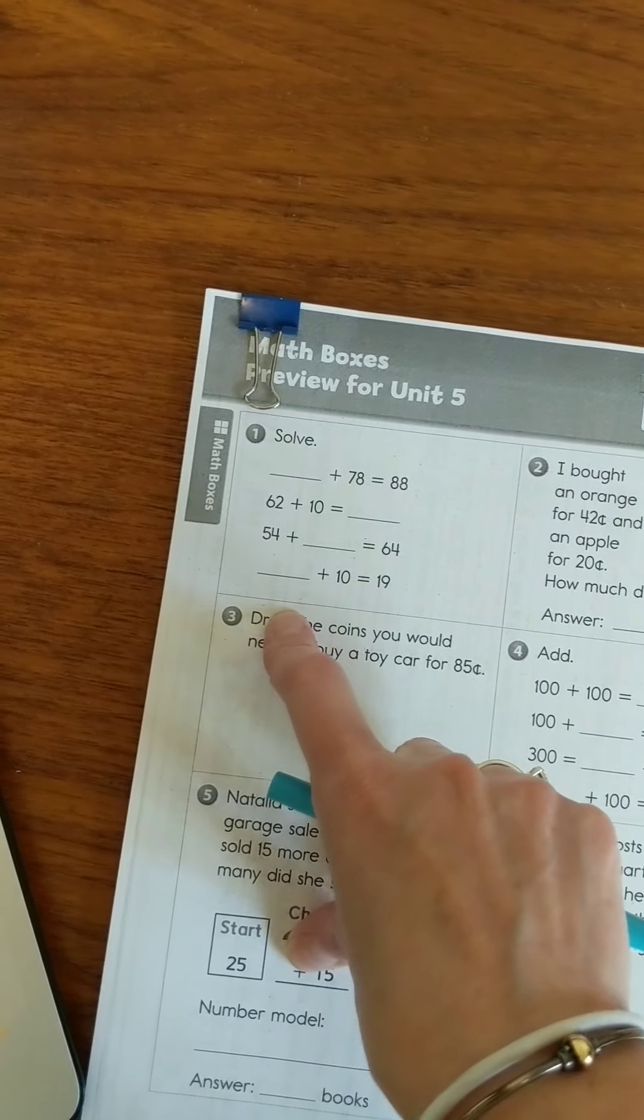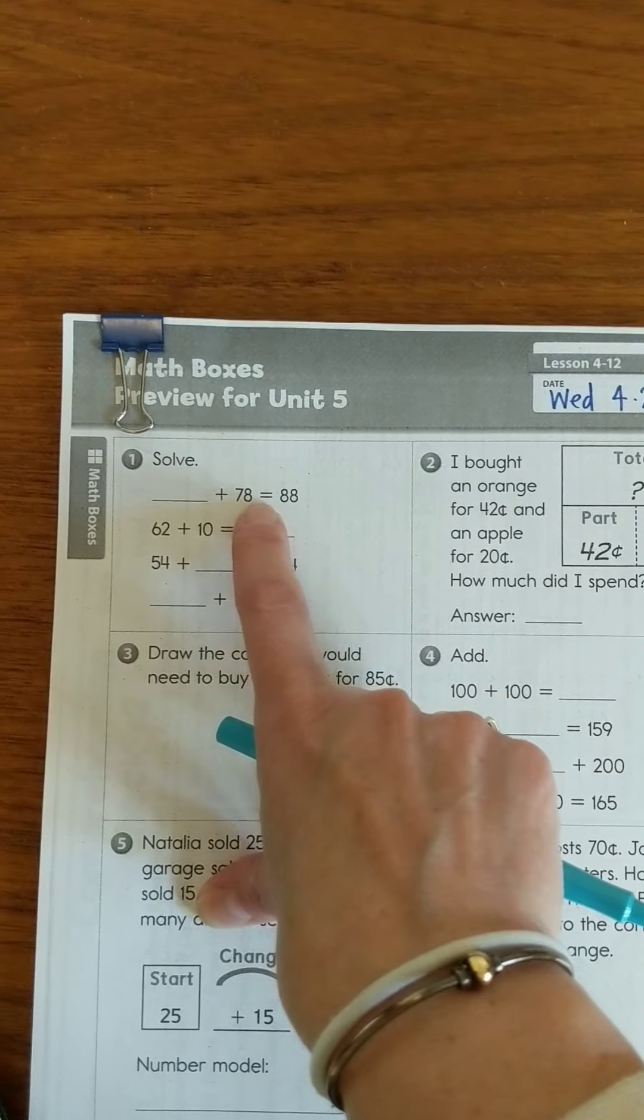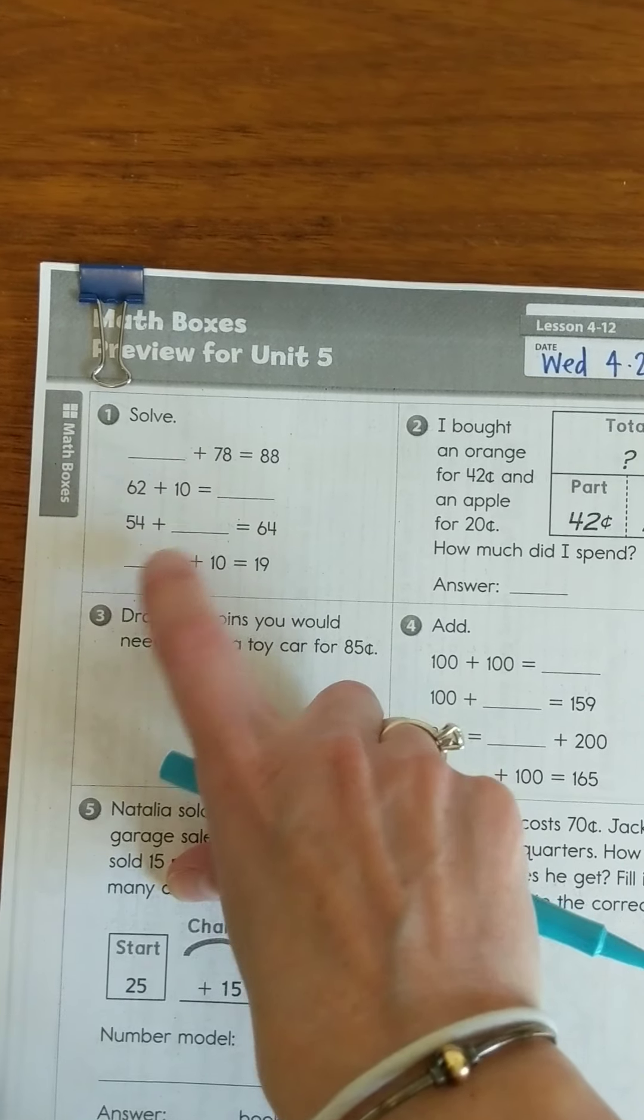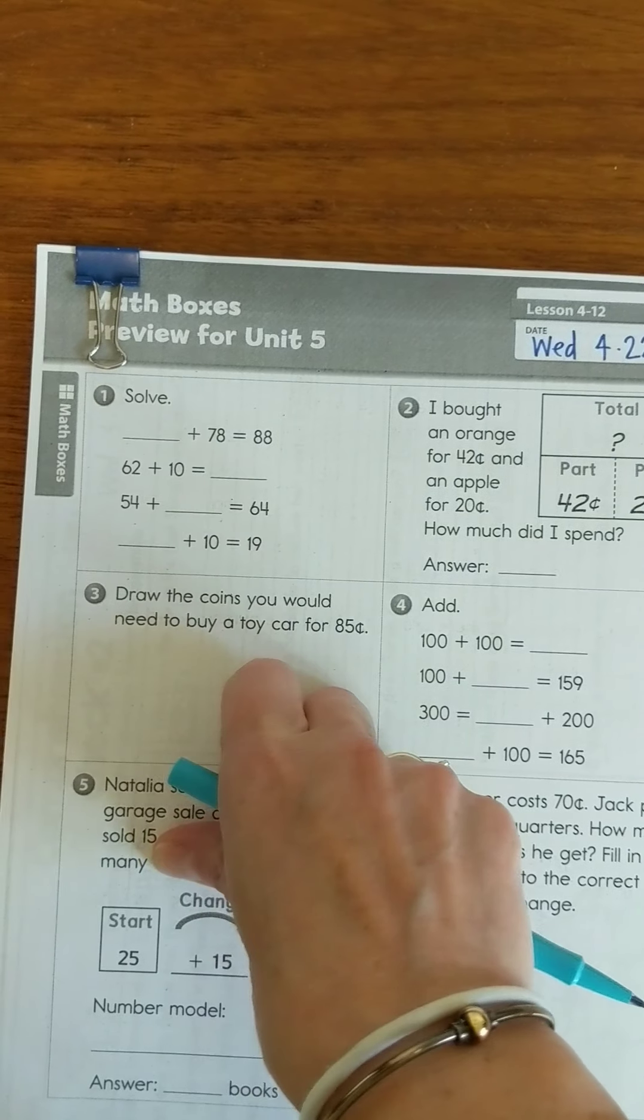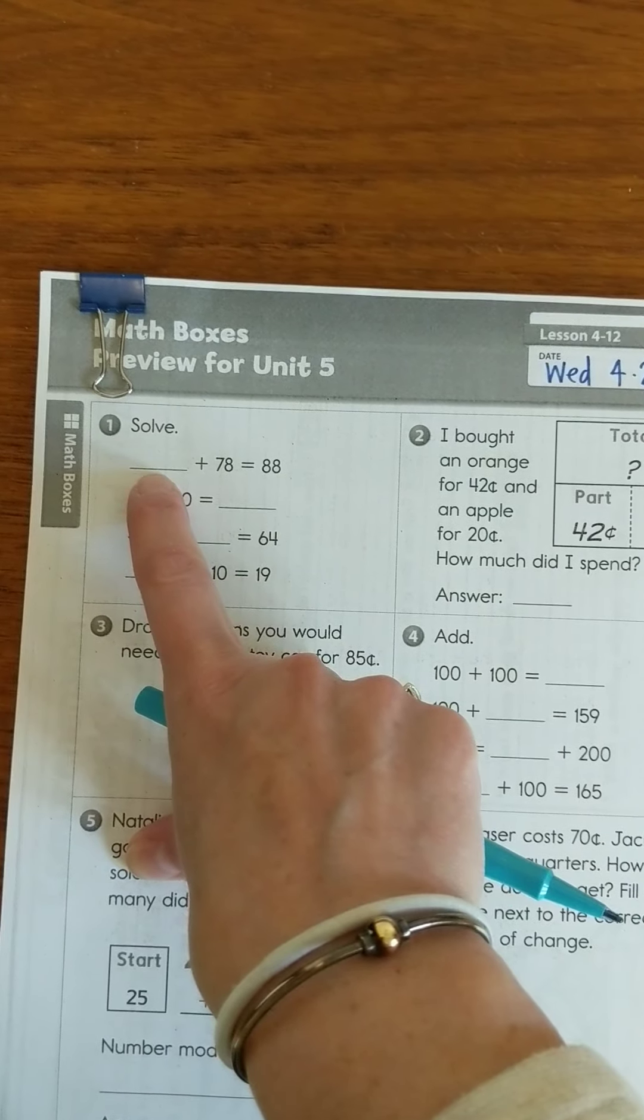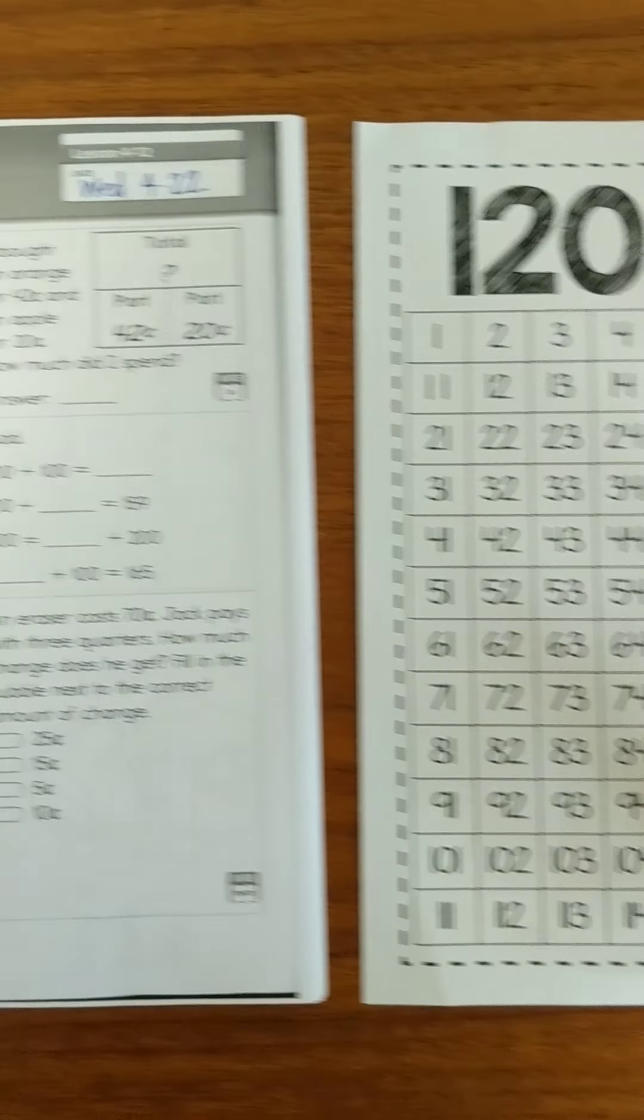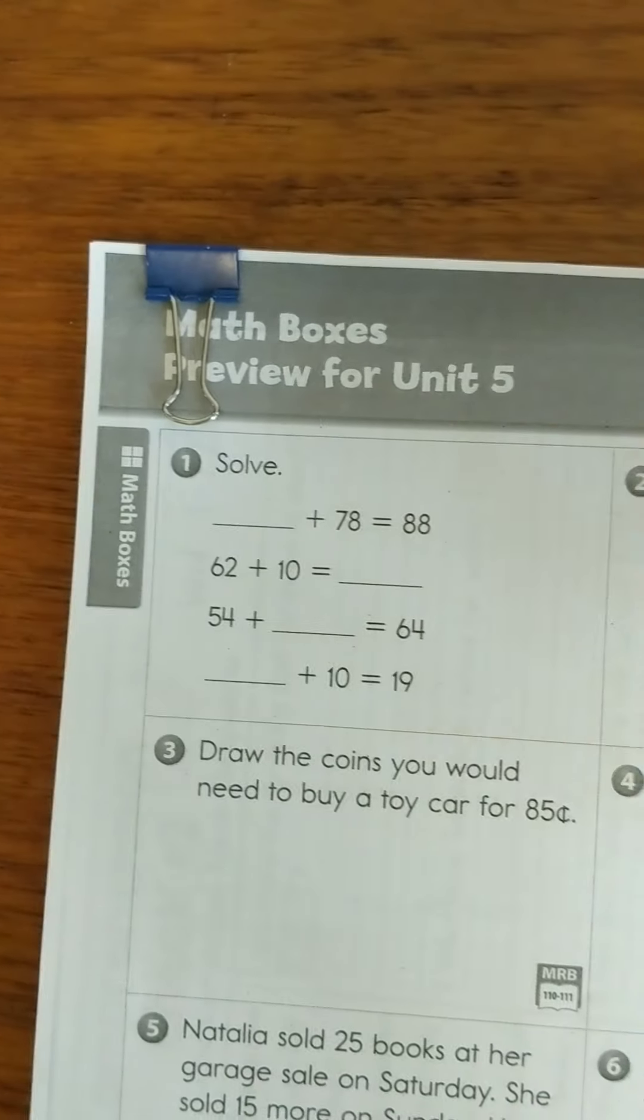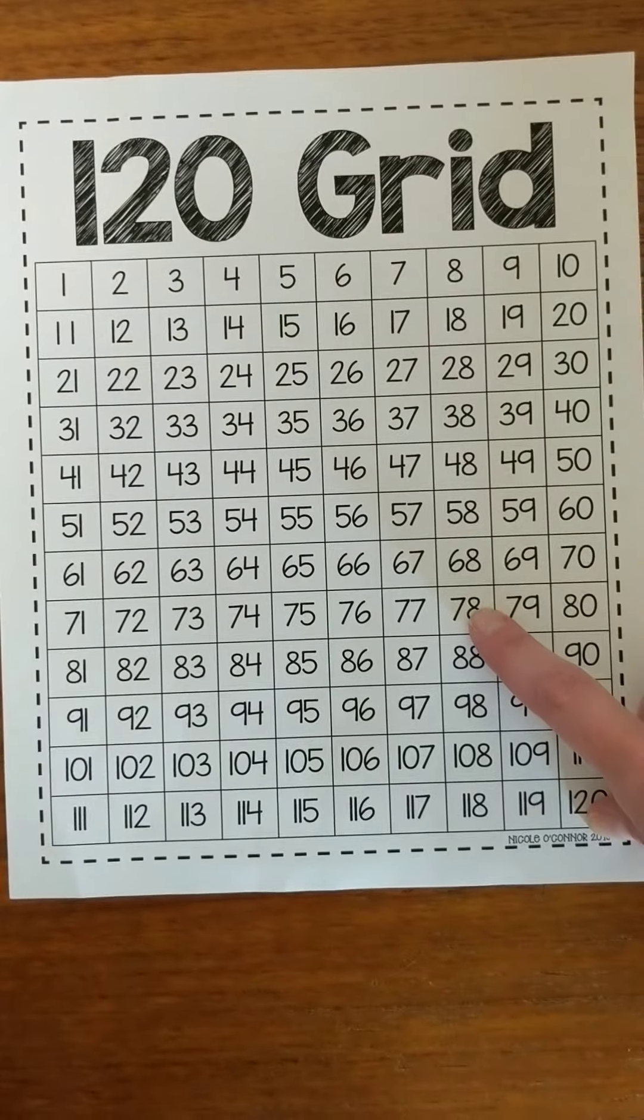What we are doing is we are looking for the missing number in each of these. We have blank plus 78 equals 88, 62 plus 10 equals blank, 54 plus blank equals 64, and blank plus 10 equals 19. We'll do a couple of these together and then I'll leave you to do the other ones. On my number grid I can start at 78 and I know that I'm going to add some number to that to get me up to 88.